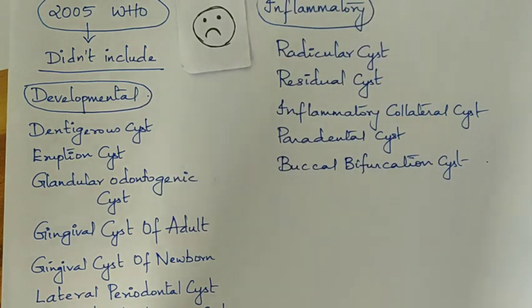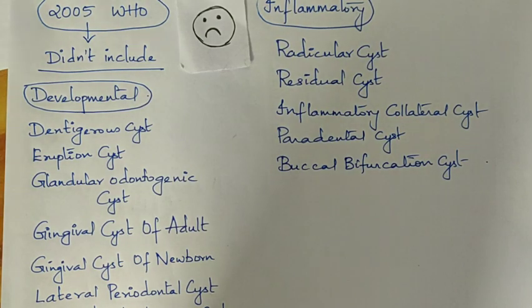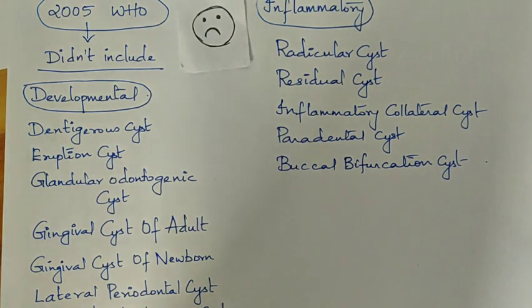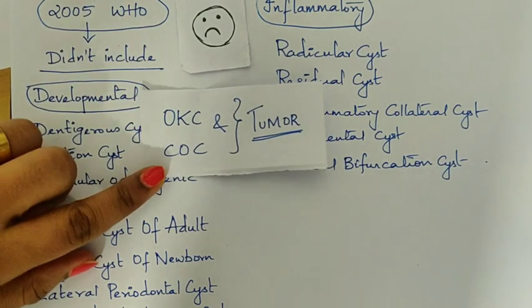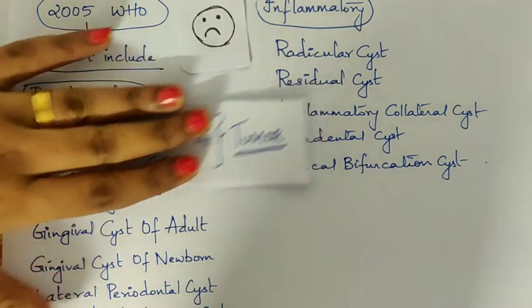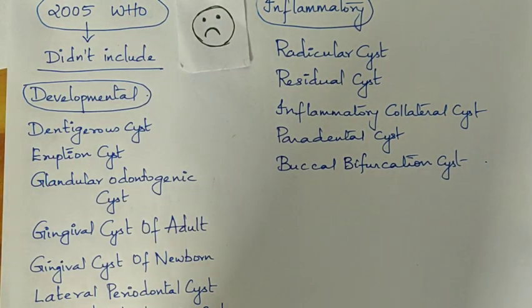In 2005, the third edition of the WHO classification did not include odontogenic cysts at all. Broadly, odontogenic cysts are divided into developmental and inflammatory. The 2005 developmental cysts included dentigerous, eruption, glandular odontogenic, gingival cyst of adult and newborn, lateral periodontal cyst, and botryoid odontogenic cyst. OKC and COC were reclassified as odontogenic tumors. Inflammatory cysts included residual cysts, radicular cysts, inflammatory collateral cysts, paradental cysts, and buccal bifurcation cysts.